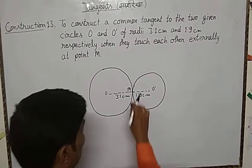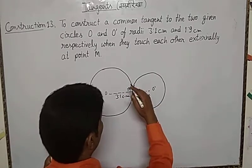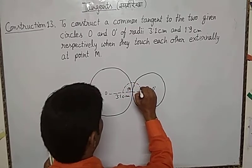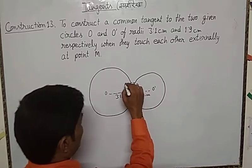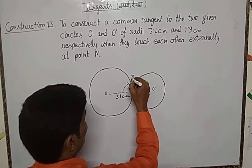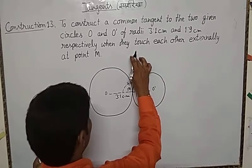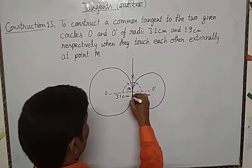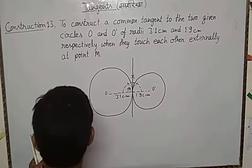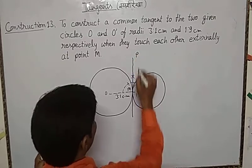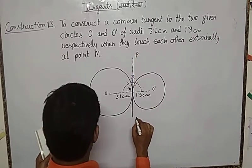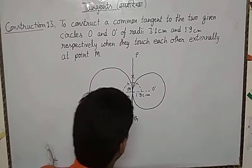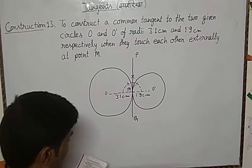Take a distance in your compass and draw the perpendicular line from M in this type. Then we should draw the tangent — this is tangent PN and tangent PQ. In this way you can draw this tangent when a big circle and a small circle touch each other at a point M and the radii are given.